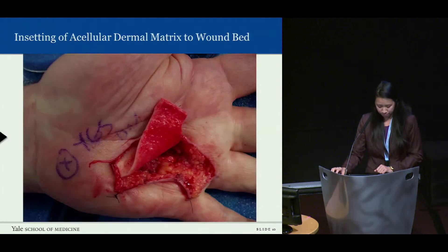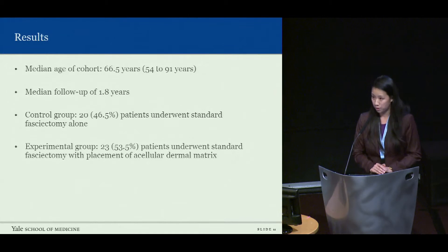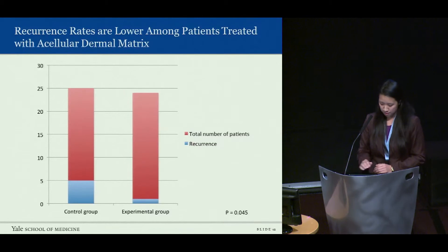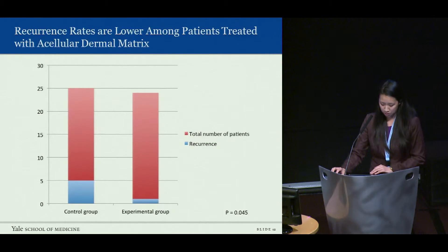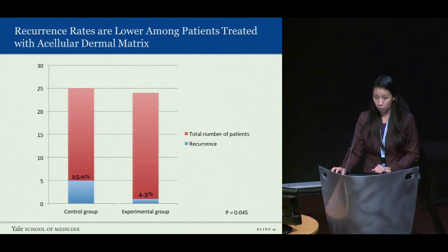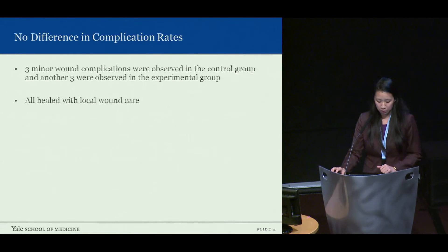The median age of our cohort was 66 years, and the median length of follow-up was 1.8 years. We had 20 patients in our control group and 23 in our experimental group, with no demographic differences between them. Our results showed that recurrence rates were significantly lower in patients treated with Alloderm: 25% in the control group versus only 4% in the experimental group — a statistically significant difference. There were three minor wound complications in each group, all of which healed with local wound care alone.